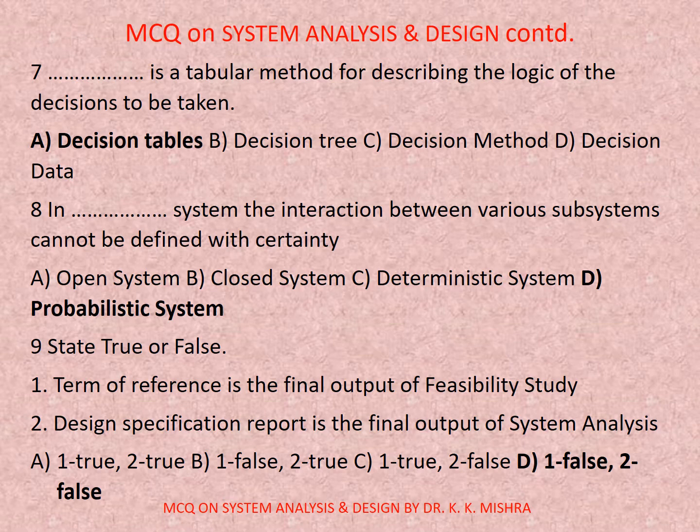Question number 8. In this system, the interaction between various systems cannot be defined with certainty. Options are: A, open system; B, closed system; C, deterministic system; D, probabilistic system. Correct option is D, probabilistic system.